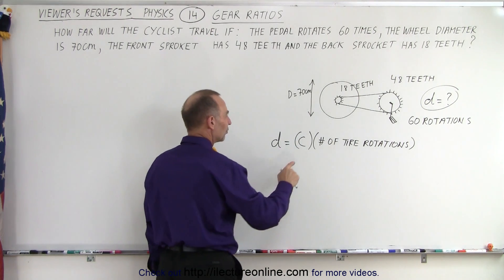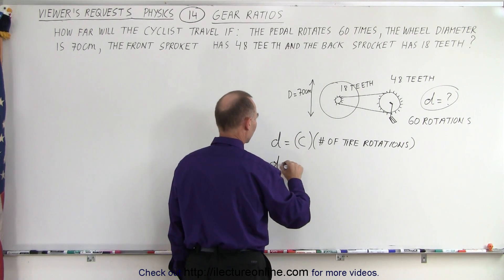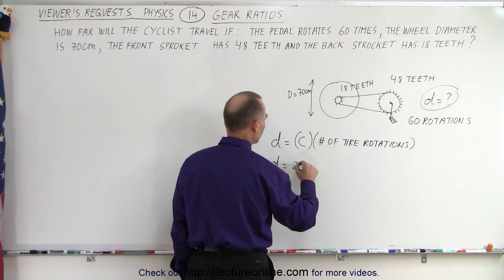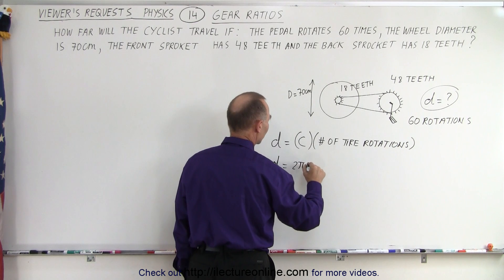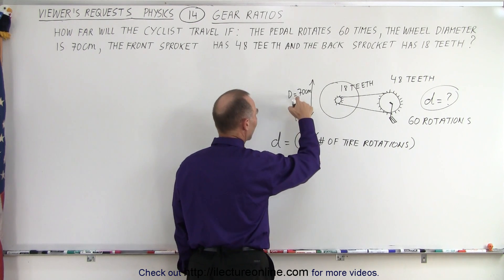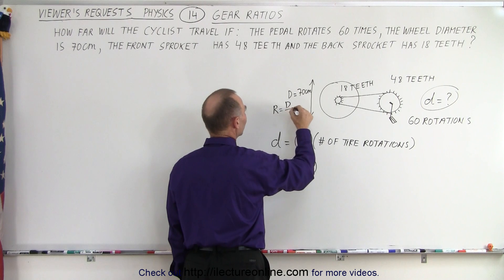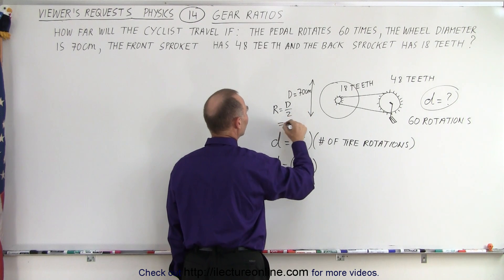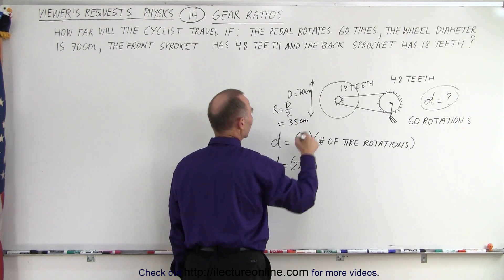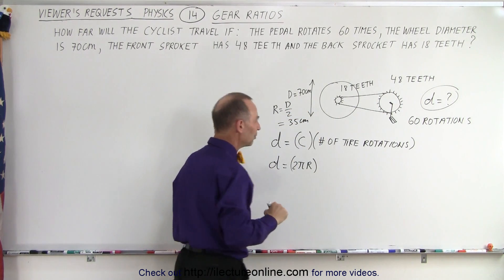Now the circumference, since it's a circle, is equal to two pi times the radius. They gave the diameter, which means the radius is equal to the diameter divided by two, which is therefore equal to 35 centimeters. So we have the radius and we have two pi.